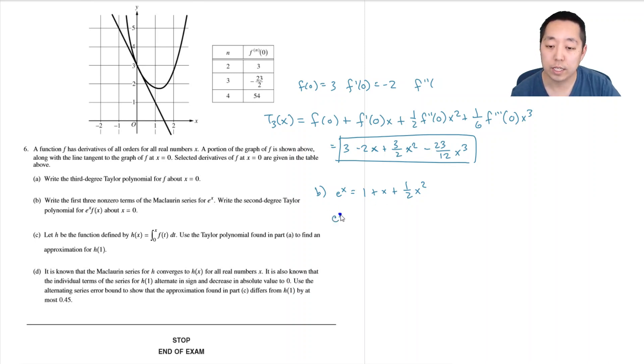So e^x times f(x) is approximately equal to... I want the second degree so I only want to go up to x squared. So I'm going to do (1 plus x plus one half x squared) times (3 minus 2x plus three halves x squared). I don't need the extra terms because higher order terms are going to drop since I'm only doing a second degree Taylor polynomial.